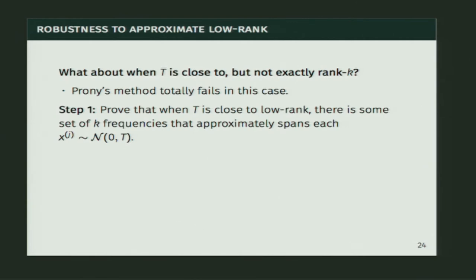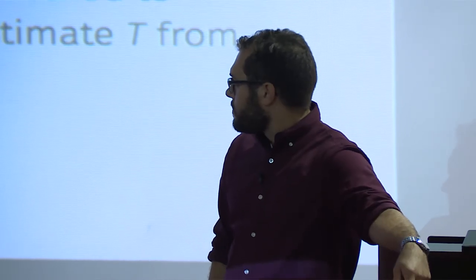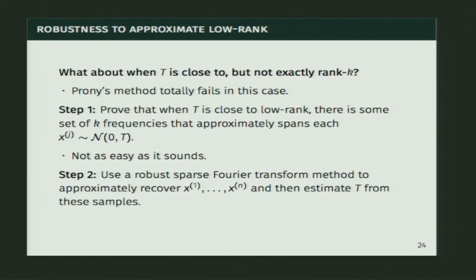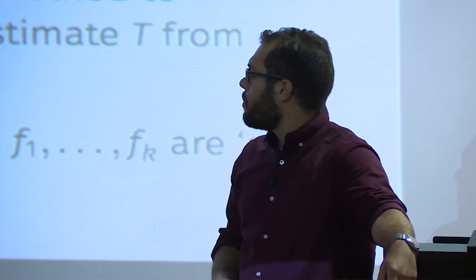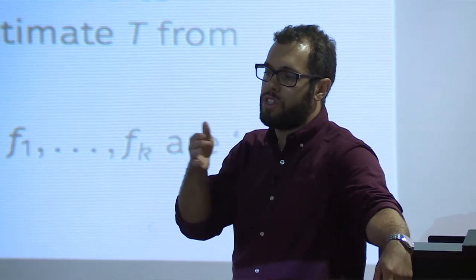When T is close to but not exactly low rank, Prony's method fails since it's not robust to noise. Our approach has two steps. Step one: prove that when T is close to low rank, there's some set of k frequencies that approximately span every sample from our covariance — showing this independence-like property holds in a more robust way. Step two: use a robust sparse Fourier transform method to approximately recover our samples, and then estimate T from these approximate samples.